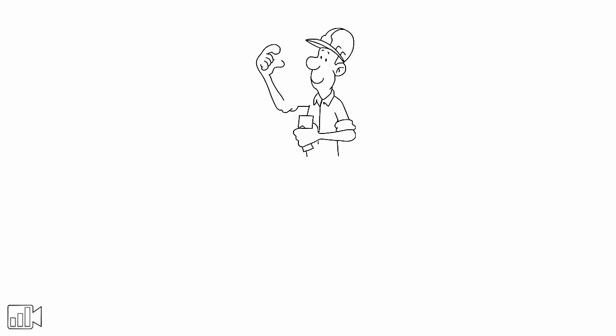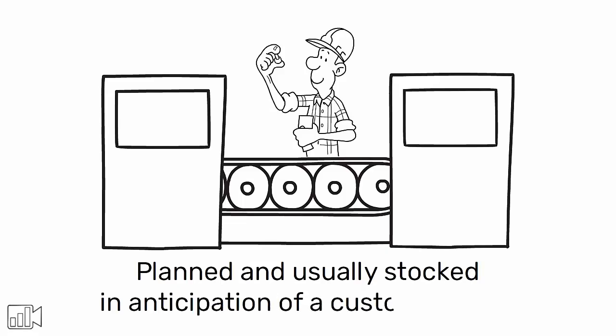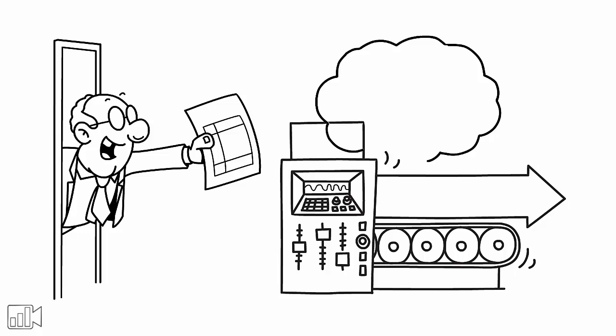The key components used in the assembly or manufacturing process are planned and usually stocked in anticipation of a customer order. Receipt of an order initiates assembly of the customized product.